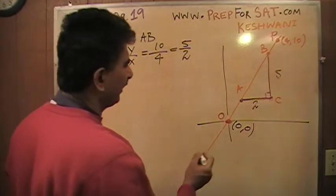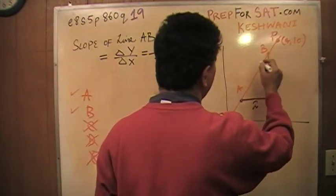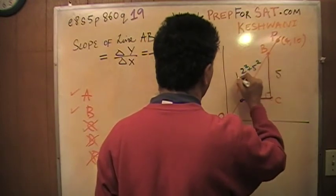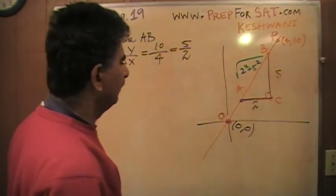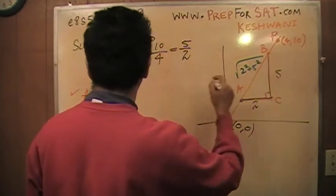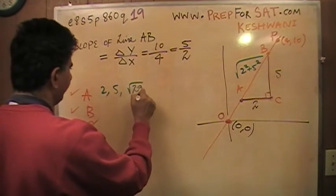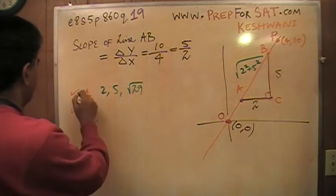But anyway, aside from that, all I have to figure out is, what is the hypotenuse here? If this is 2 and this is 5, it's got to be 2 squared plus 5 squared, the square root of that. And that's going to be 4 plus 25. So it has to be 2, 5 and the square root of 29. Answer is A.